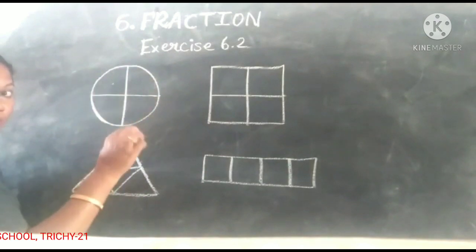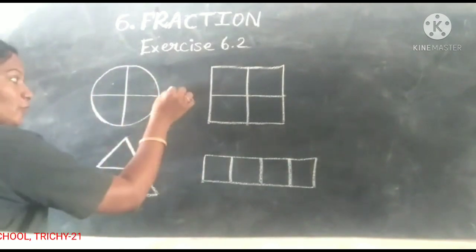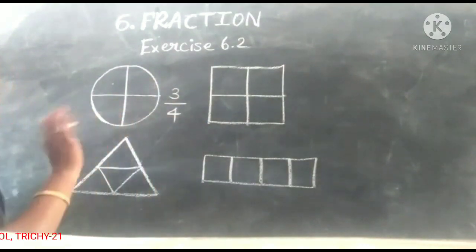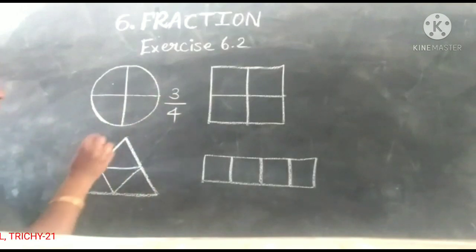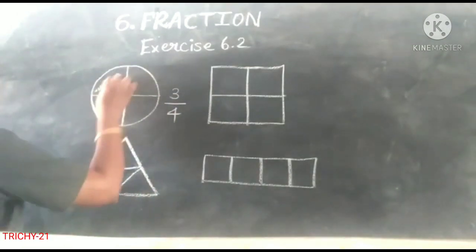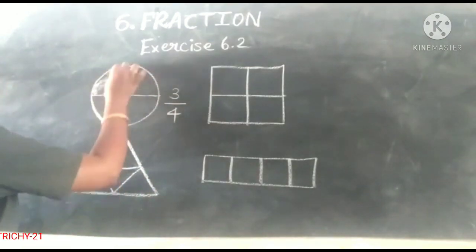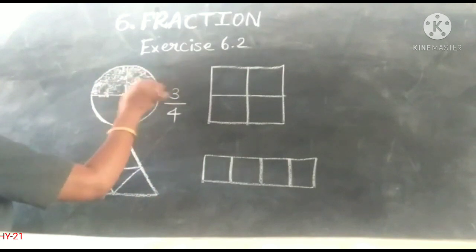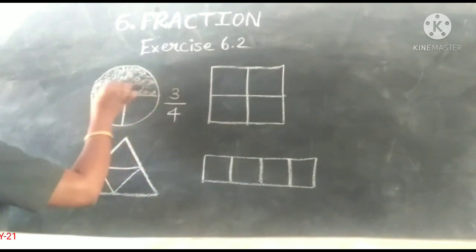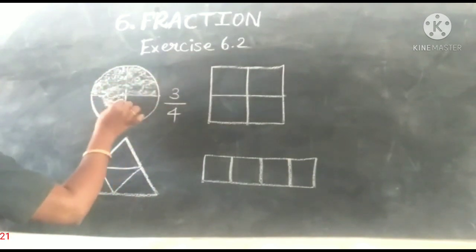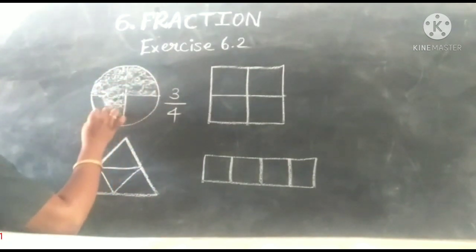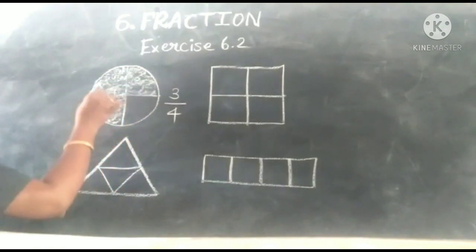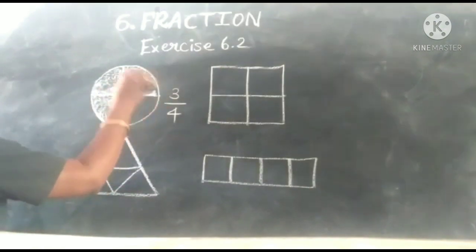Three-fourths means you want to shade three parts. See — one, two, three, four. One, two, three. So this is three-fourths.